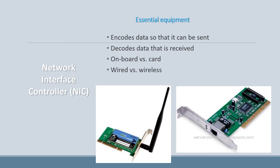A NIC encodes the data traveling around in your computer so that it can be sent over the network, and when it receives data back from the network it decodes it so your computer can use it. You get onboard NICs like the ones built into a laptop, or a card that plugs into the motherboard in older computers. You also get a wired NIC, which can only take a cable, and a wireless NIC that connects to Wi-Fi and has an antenna.